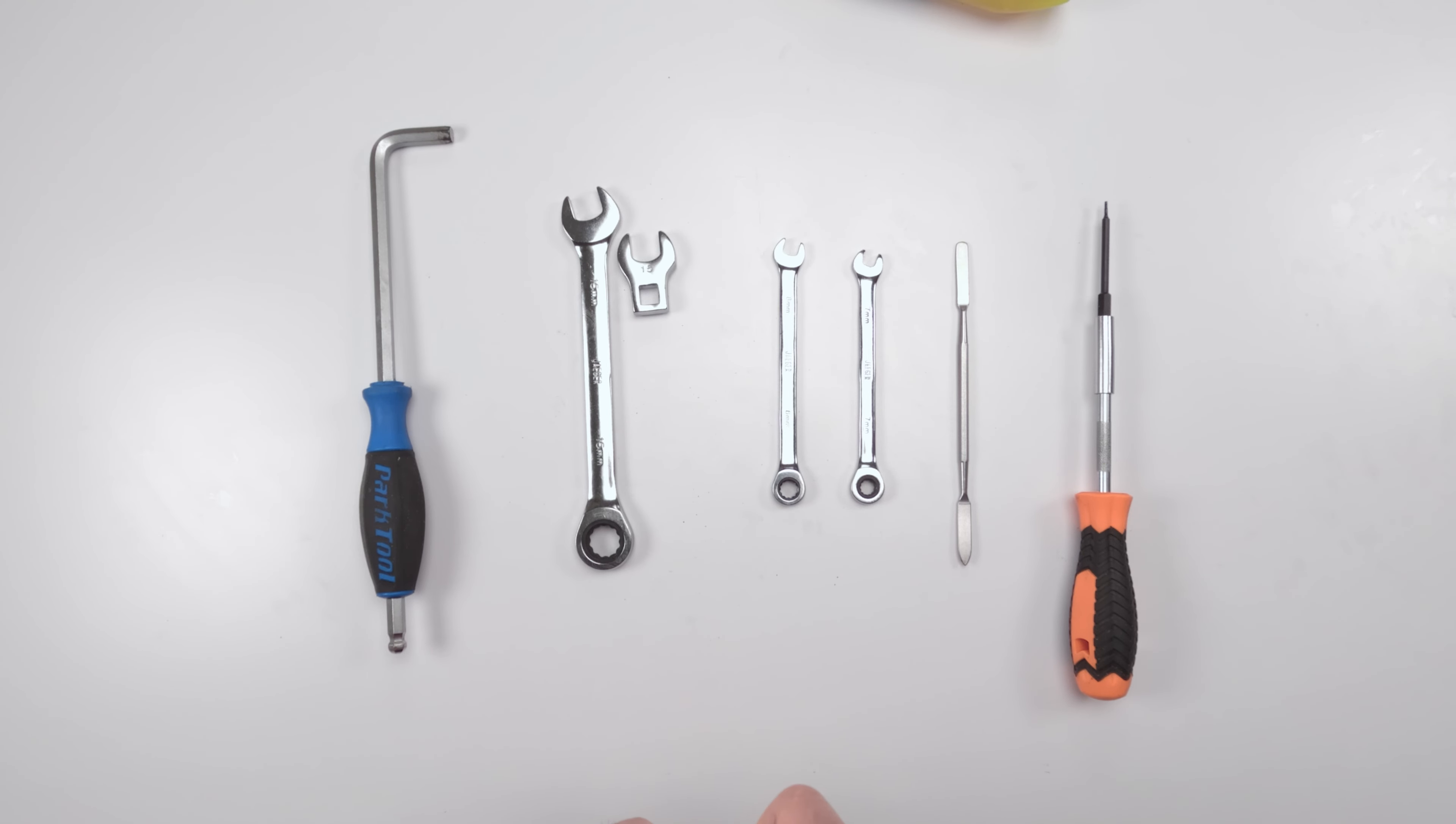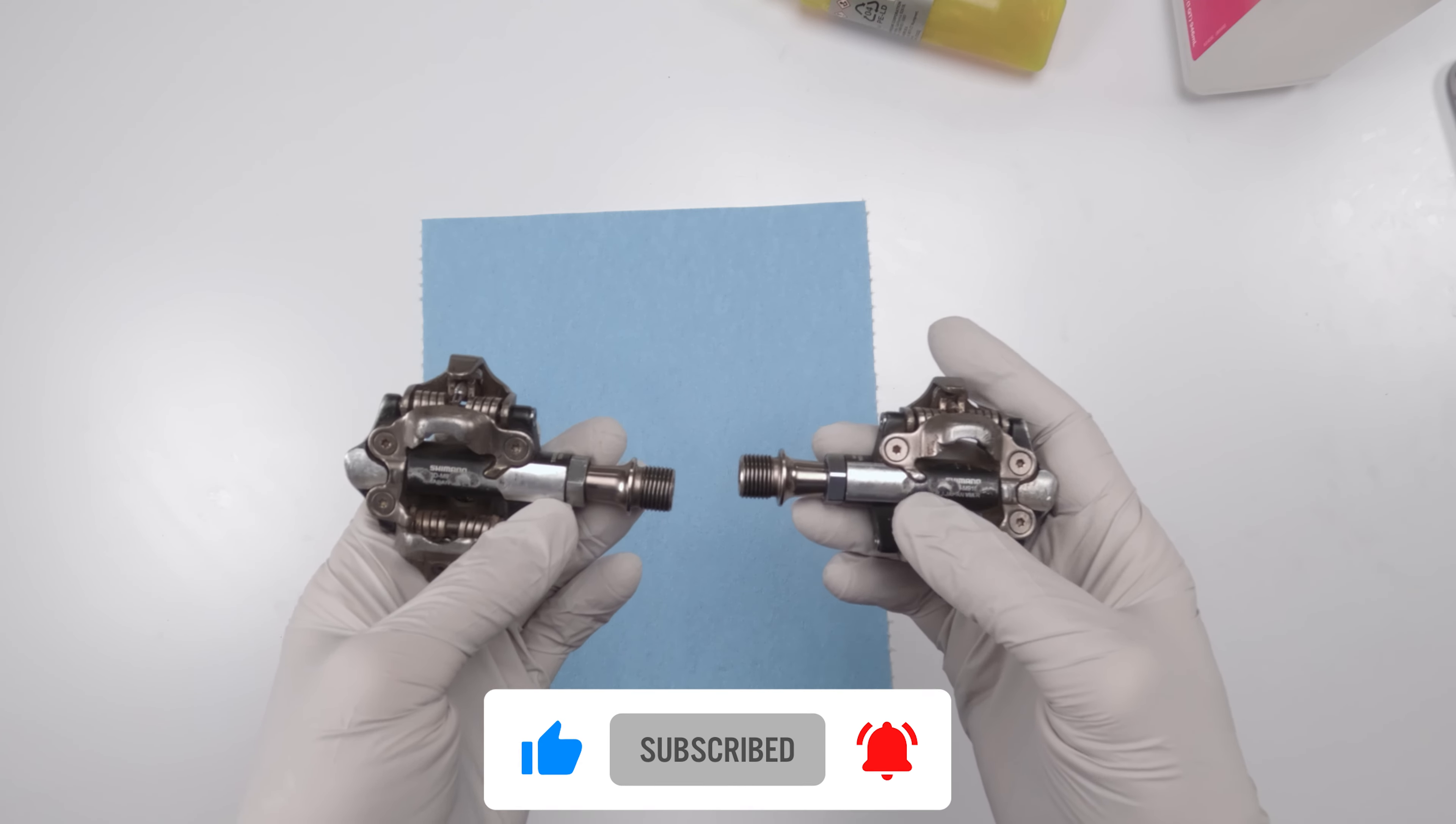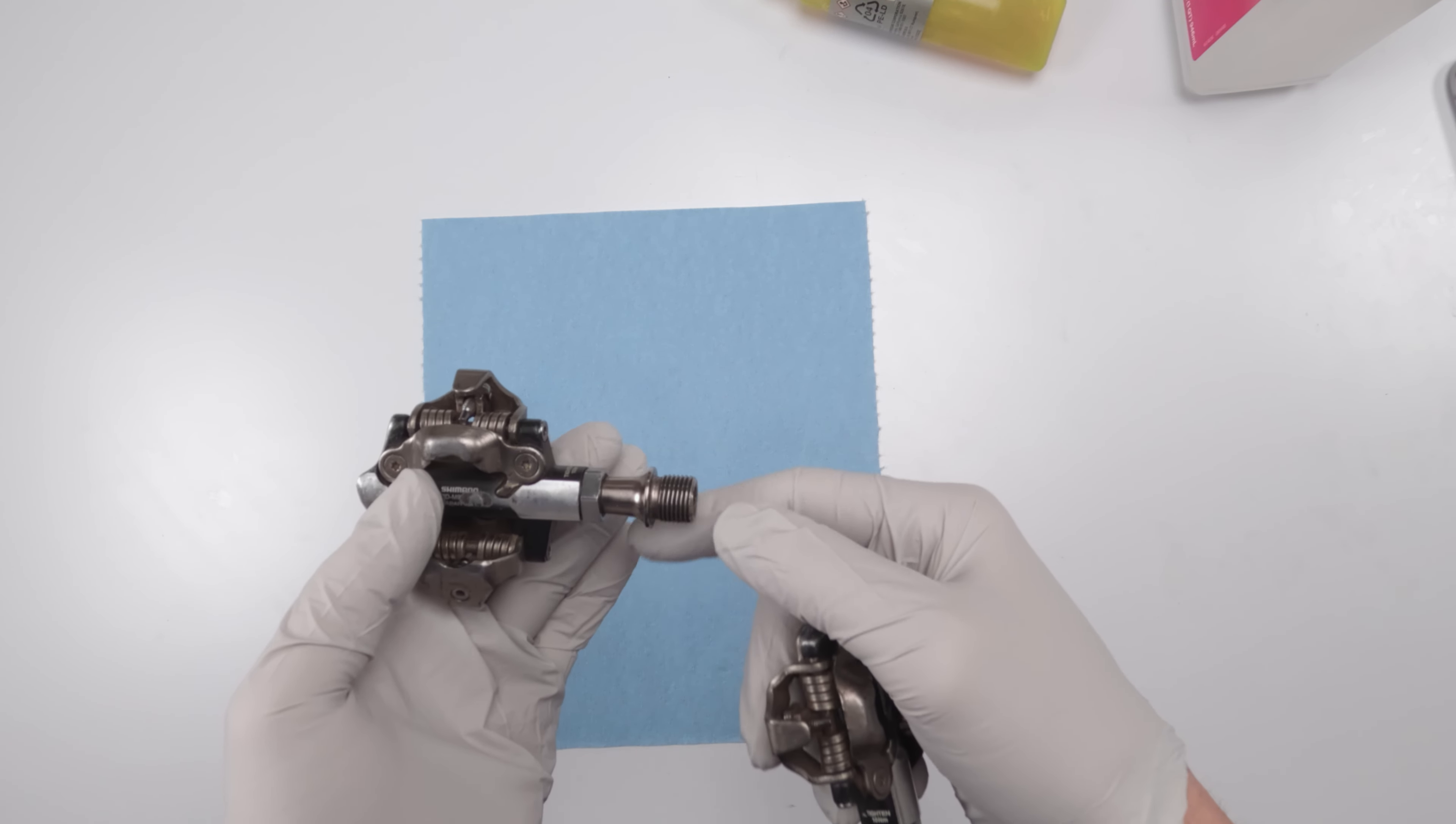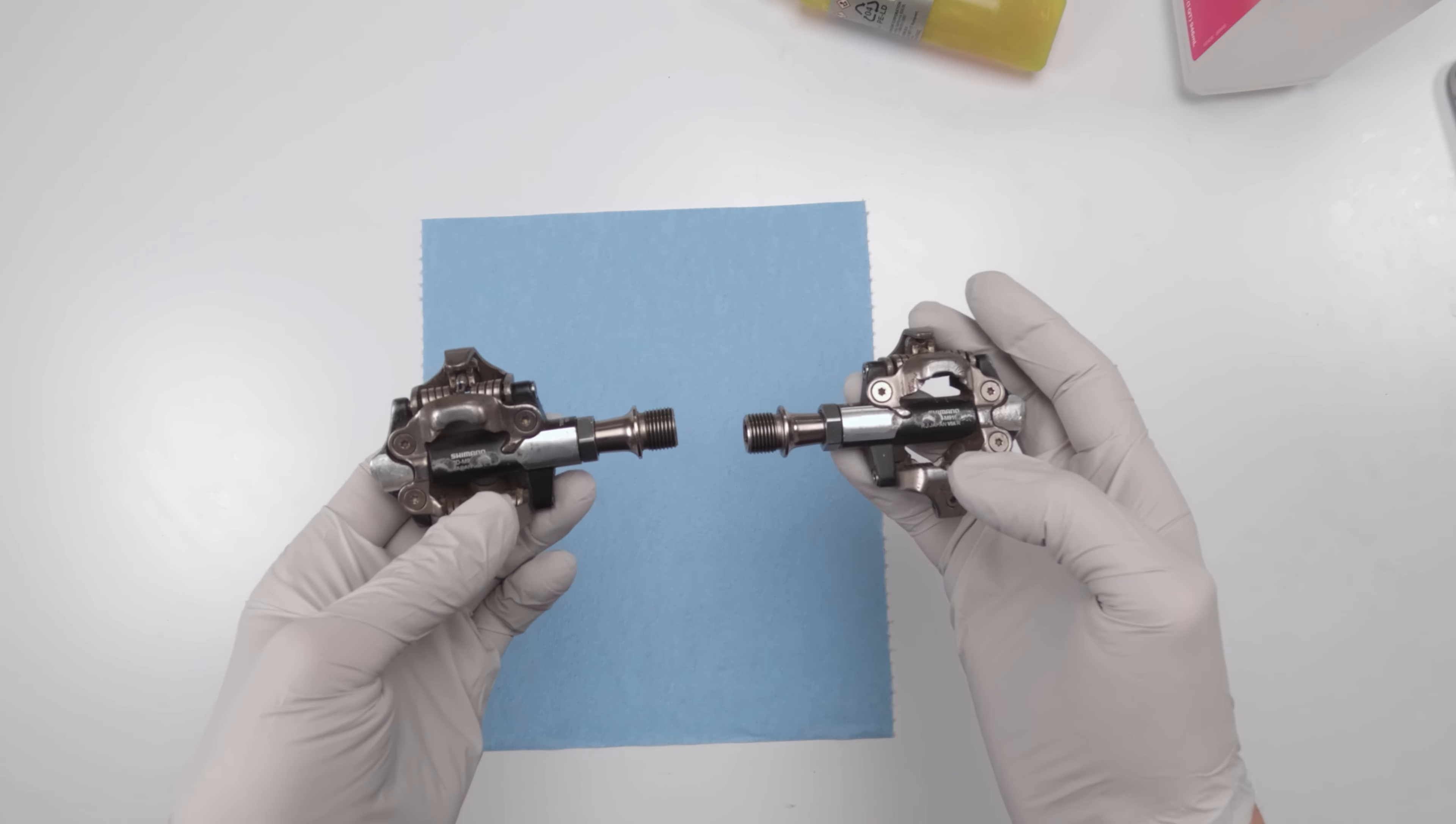All right, next up, let's take apart a pedal. So as you know, we have two pedals, a left one and a right one. They're identical outside of threads. They turn in different directions. So I'm not going to do both pedals over here, but ultimately, I will be doing one pedal, and when servicing the other pedal, the spinning directions will be the opposite.